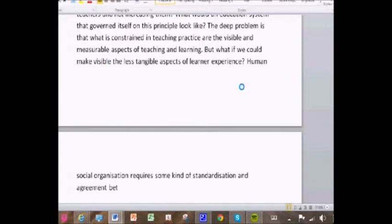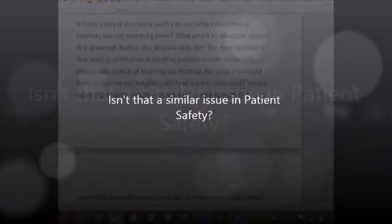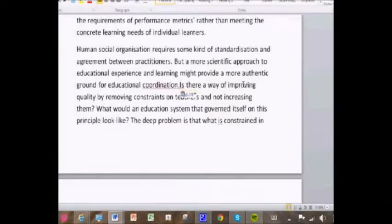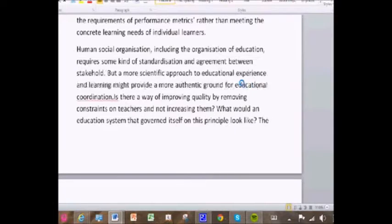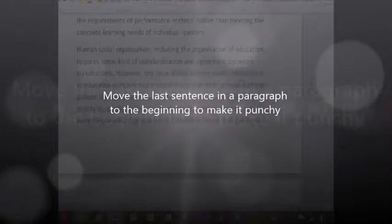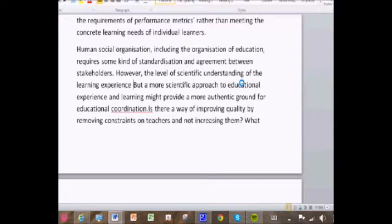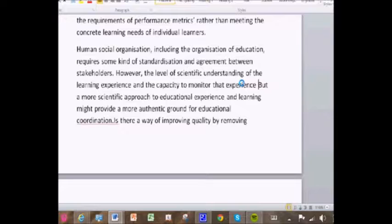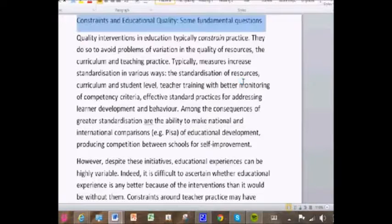Human social organization requires some kind of standardization and agreement between practitioners. So we're not saying that you shouldn't have standardization. But perhaps we should be more scientific in our approach to understanding the things that we really are measuring. So we'll look through that and just make a few more changes here. Yeah, so this is a more general paragraph now. So human social organization, including the organization of education, requires some kind of standardization. That goes to the front. So again, I've taken the last sentence and stuck at the beginning of the paragraph. However, the level of scientific understanding of learning experiences and the capacity to monitor that experience is fairly crude. Now let's change the title. Constraints and educational quality, some fundamental questions. That's good enough.